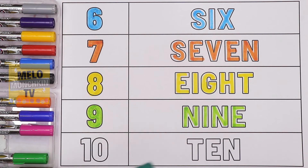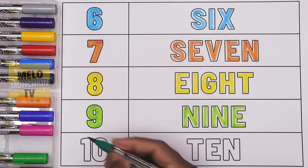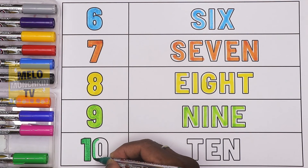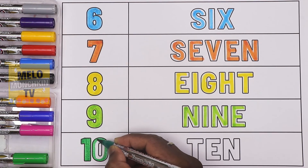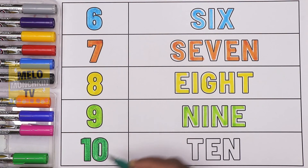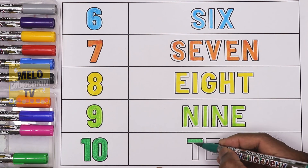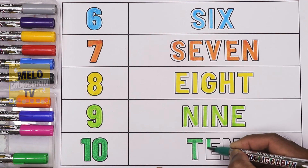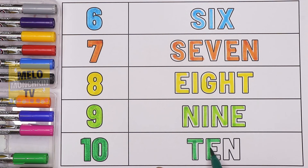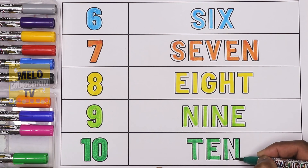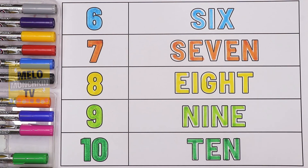And finally, I'll take dark green color to write number ten. One zero — ten. The spelling is T-E-N. Ten.